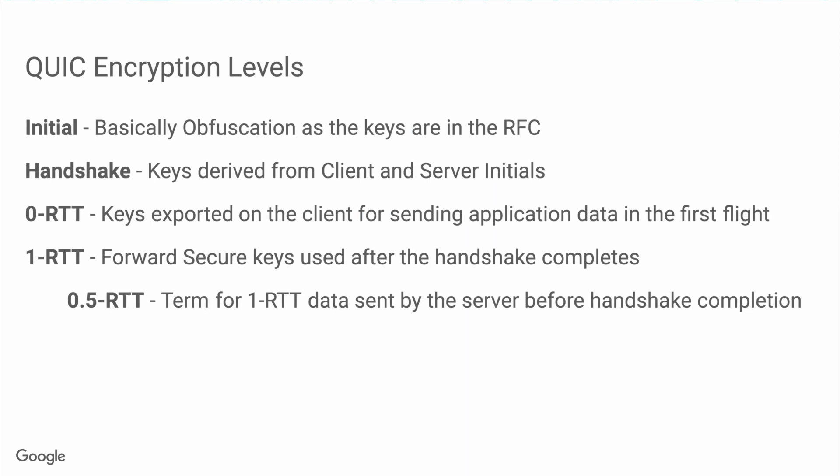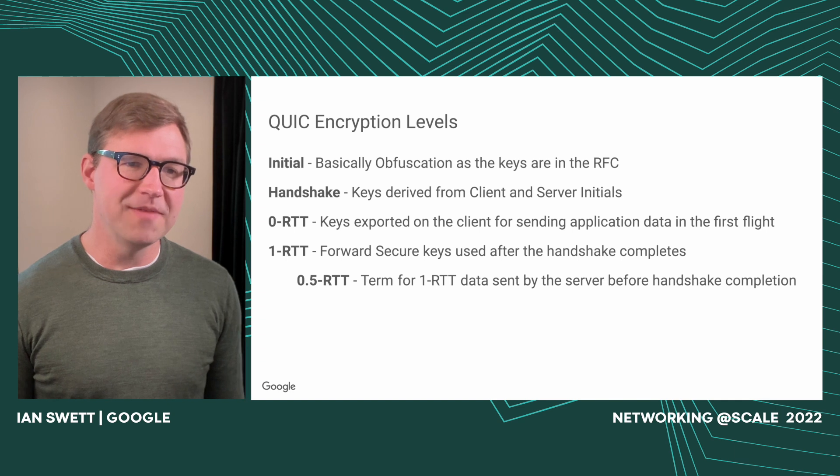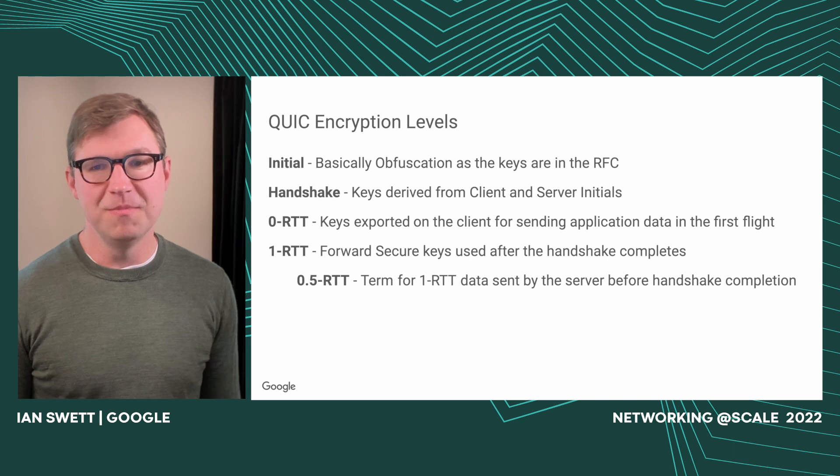Now let's walk through what a Zero-RTT handshake looks like. QUIC has multiple encryption levels. There's initial encryption, which is basically obfuscation, and that's used for things like the client hello and the server hello. There are handshake keys, which are derived from the client and server hellos. Then there's Zero-RTT keys — these are given to the client when resuming a connection and allow the client to send data in that first flight. We also have 1-RTT, which are forward secure keys used after the handshake completes. And I'll also use the term half-RTT, which is 1-RTT data sent by the server before the handshake completes.